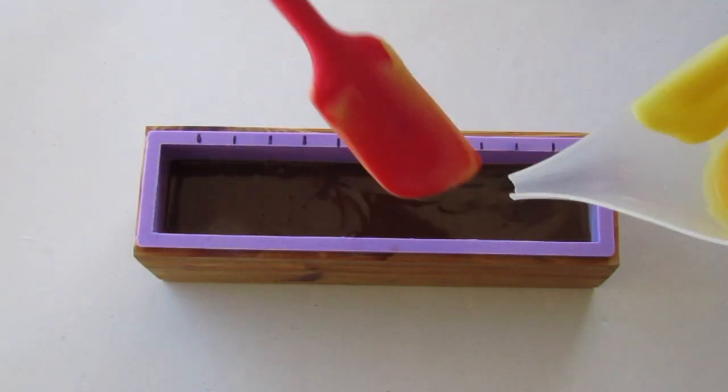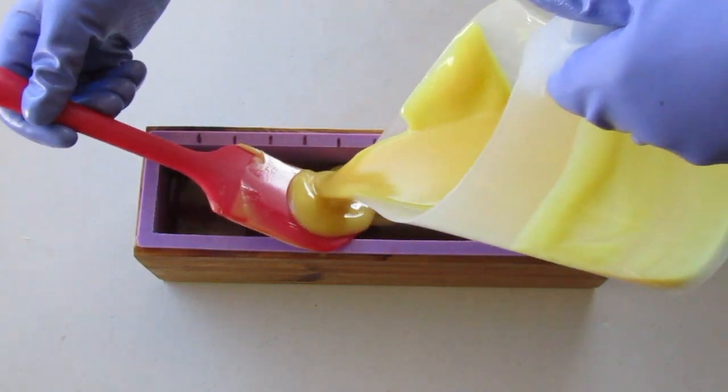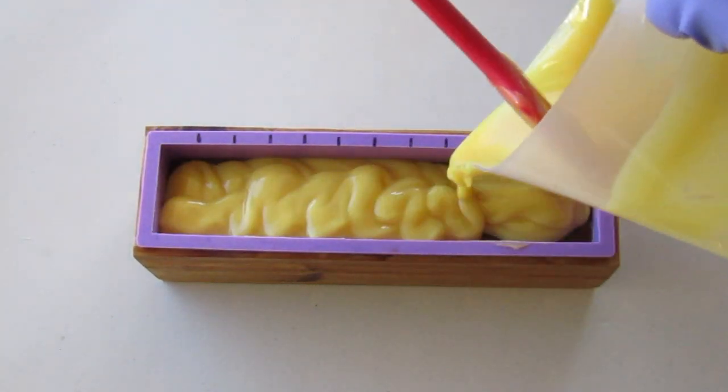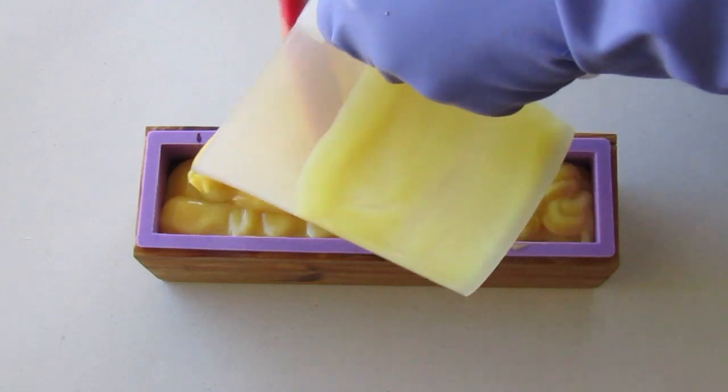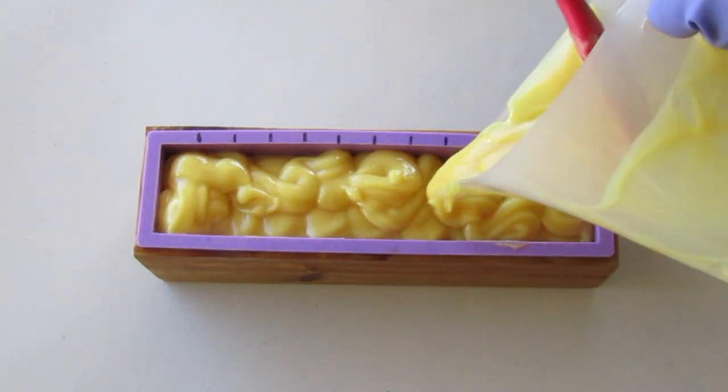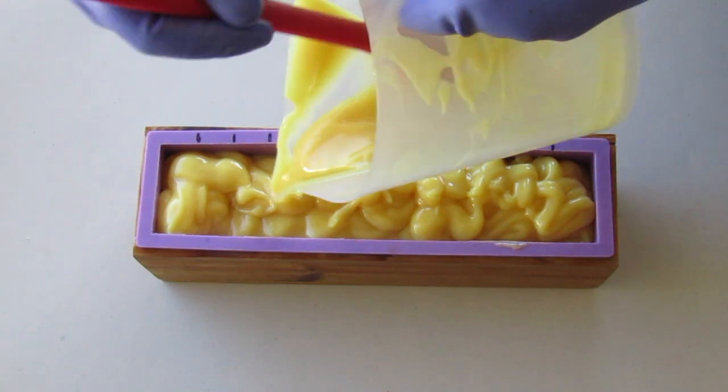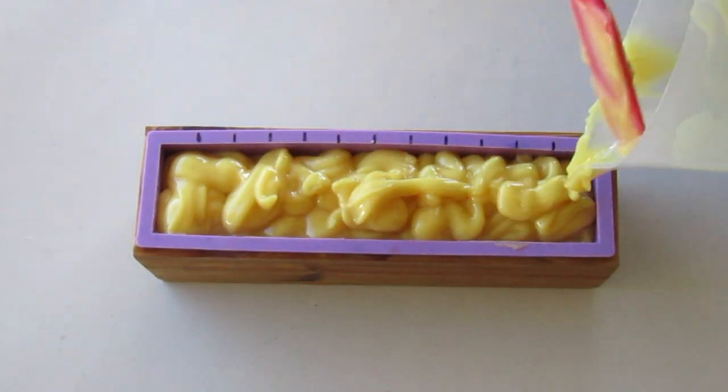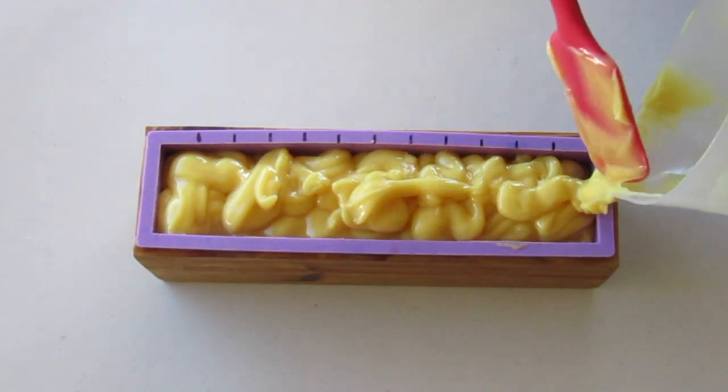The first layer has set just enough to start the second pour now. Using the spatula helps to slow the pour and stop the batter from breaking through into the cocoa layer underneath. Even though this layer was quite fluid at the start by the time it finished it had reached thick trace.